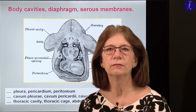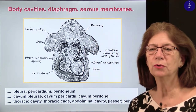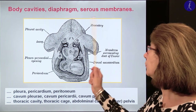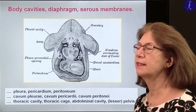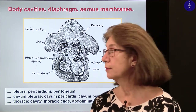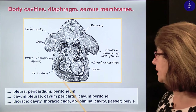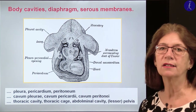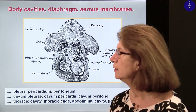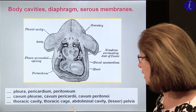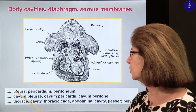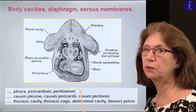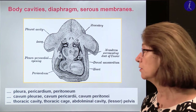Good morning students. Today we will talk about the formation of the body cavities, the diaphragm, and the serous membranes. Here we have some terms that must be clear. We have three serous membranes: the pleura, the pericardium, and the peritoneum. These are the serous membranes.